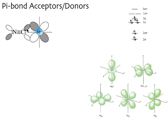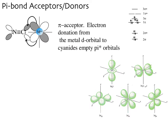See how these have the right symmetry to overlap to form new bonding interactions. Since the cyanide pi star orbital is empty, this allows the metal in this interaction to donate electron density back onto the cyanide. So we have sigma donation from the cyanide's lone pair toward the metal, and then the metal can donate electron density back into the empty pi star orbitals of the cyanide. For this reason, cyanide is called a pi acceptor ligand. Sometimes this type of interaction is called pi backbonding — electron donation from the metal d orbitals to the cyanide's empty pi star orbitals.